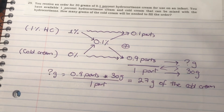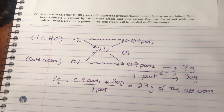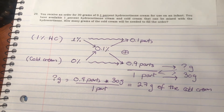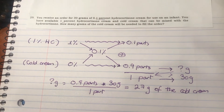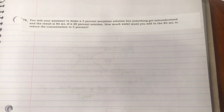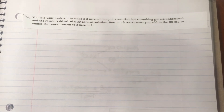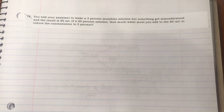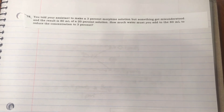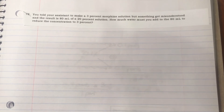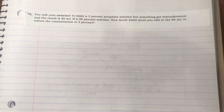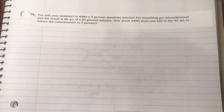That is the first question. Now let's move on to another allegation question. Here's the second problem: you told your assistant to make a 3% morphine solution, but something got misunderstood, and the result is 80 mL of a 20% solution. How much water must you add to the 80 mL to reduce the concentration to 3%?